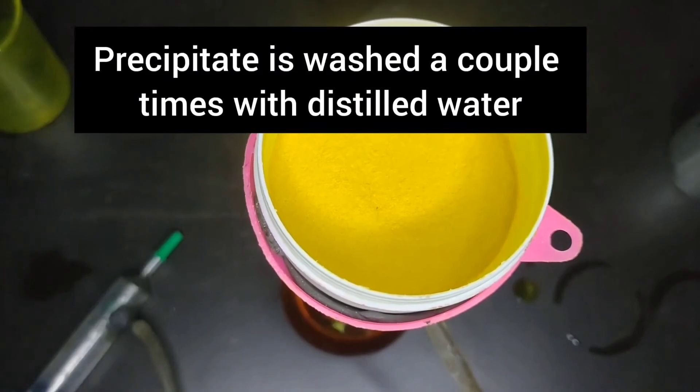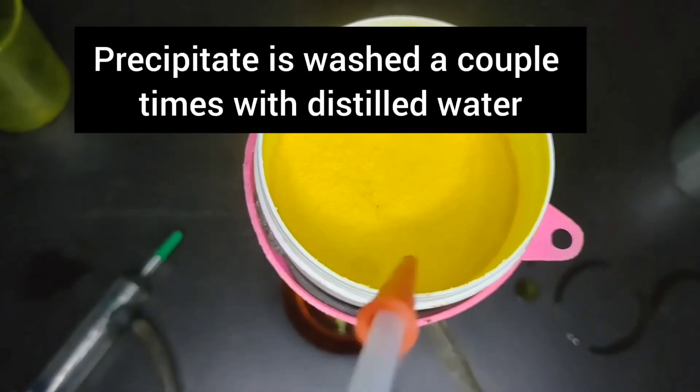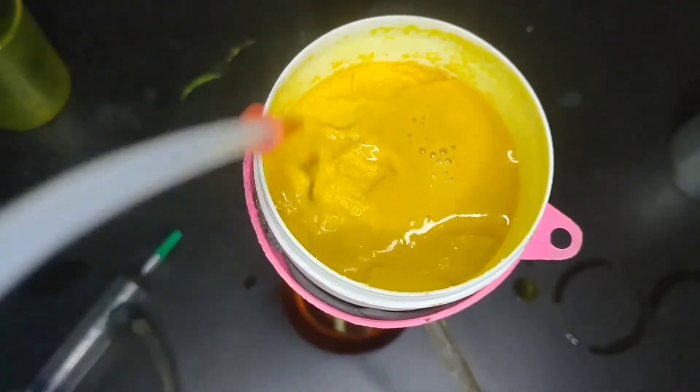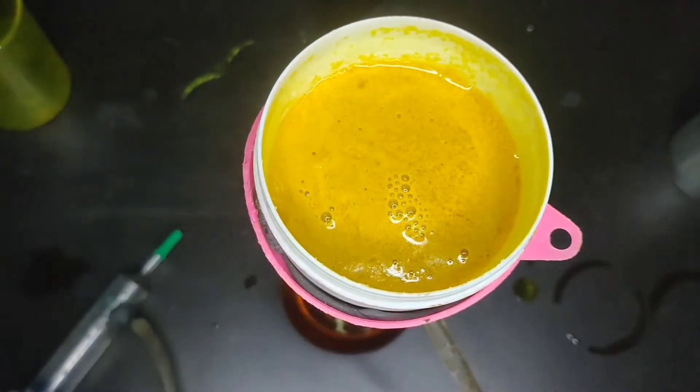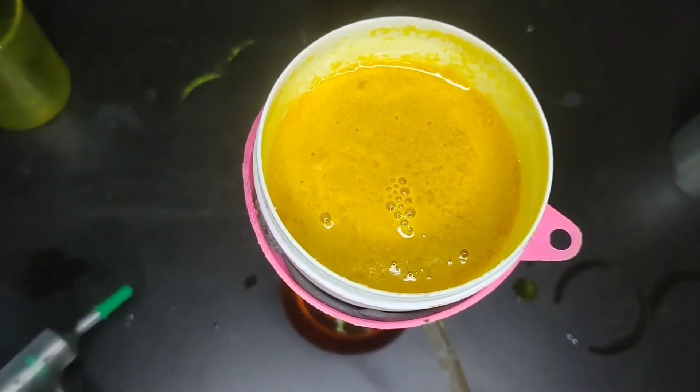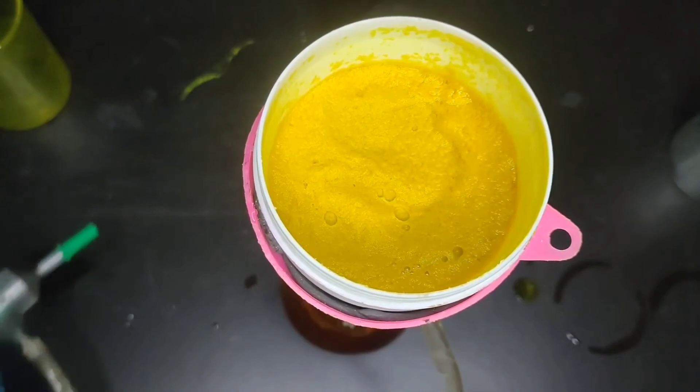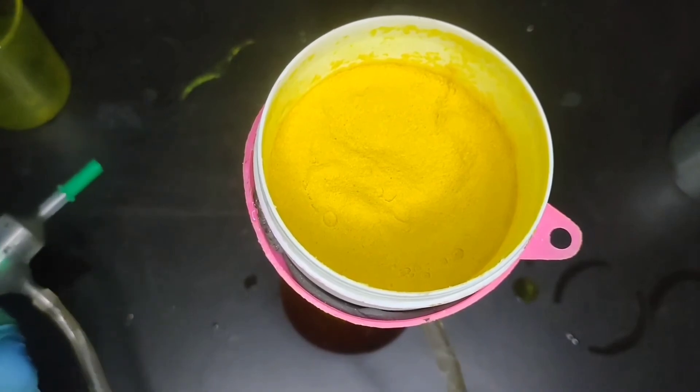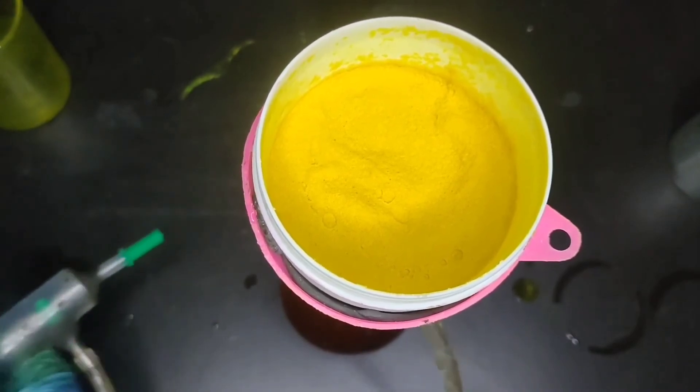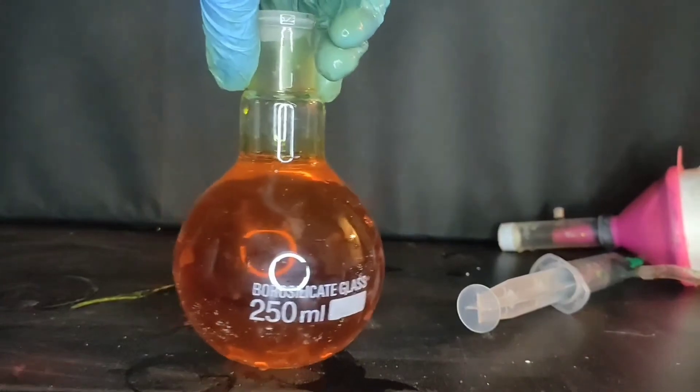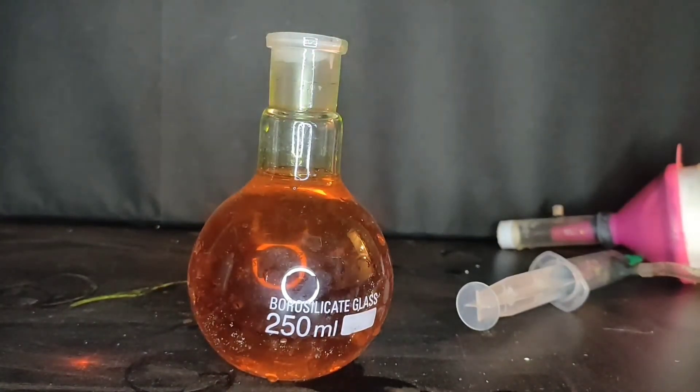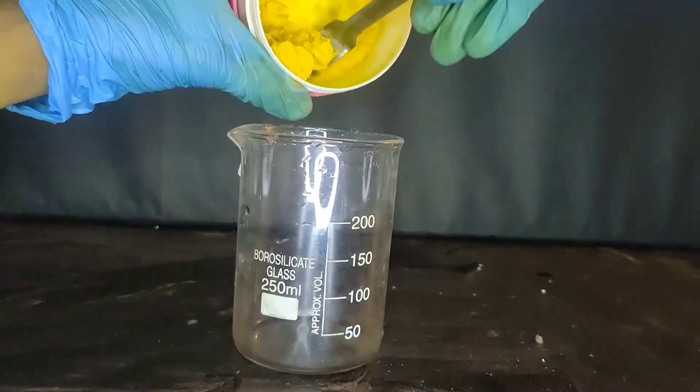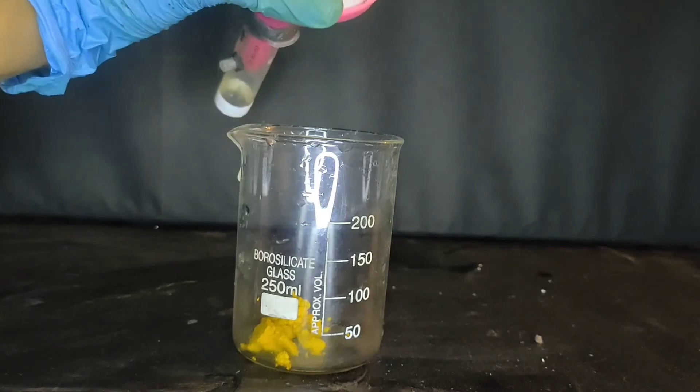The precipitate is washed a couple of times with water. The orange color of the filtrate indicates that there is ortho-nitro aniline present inside the filtrate, so this was discarded. And the precipitate is transferred into a beaker.